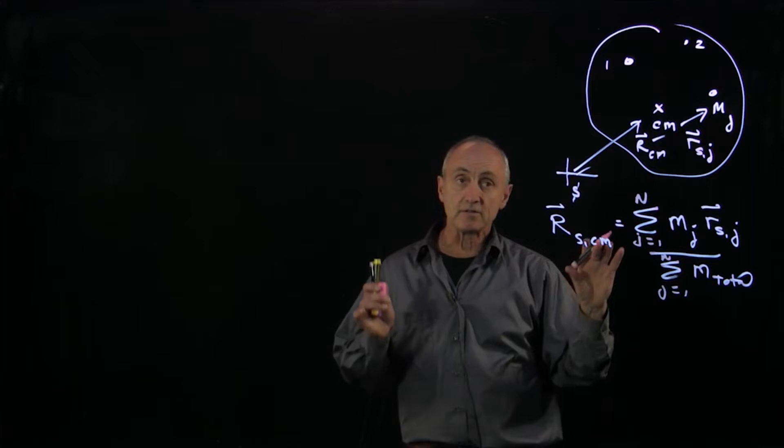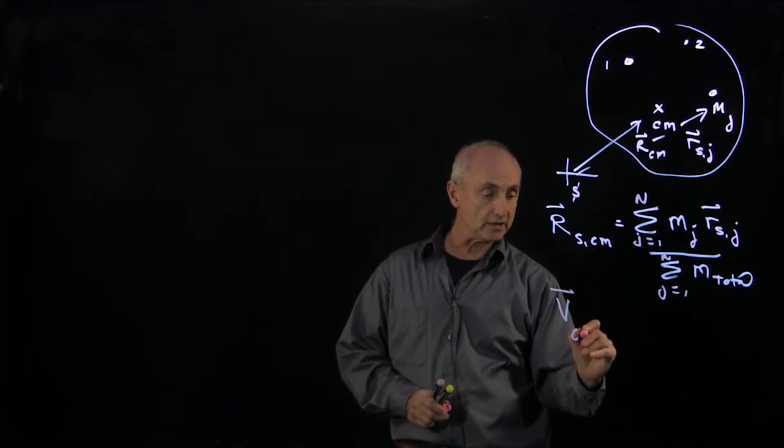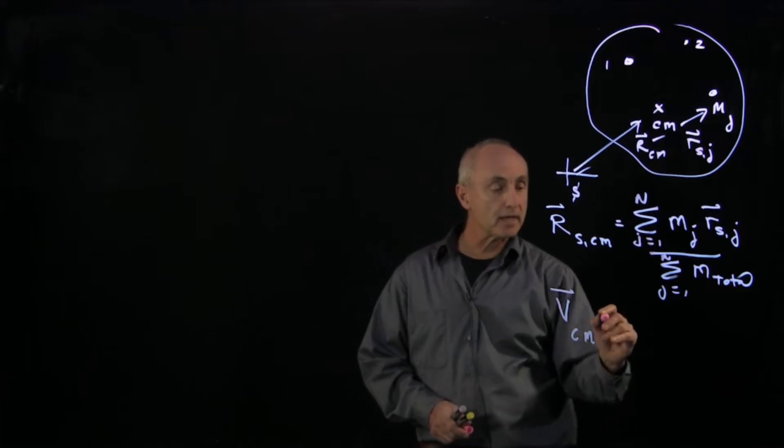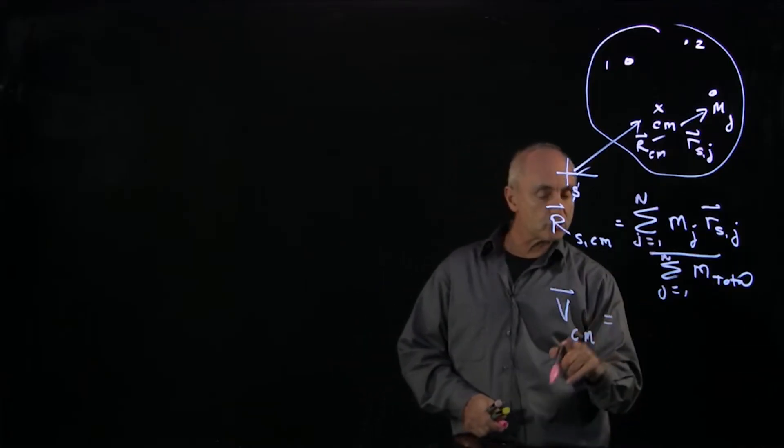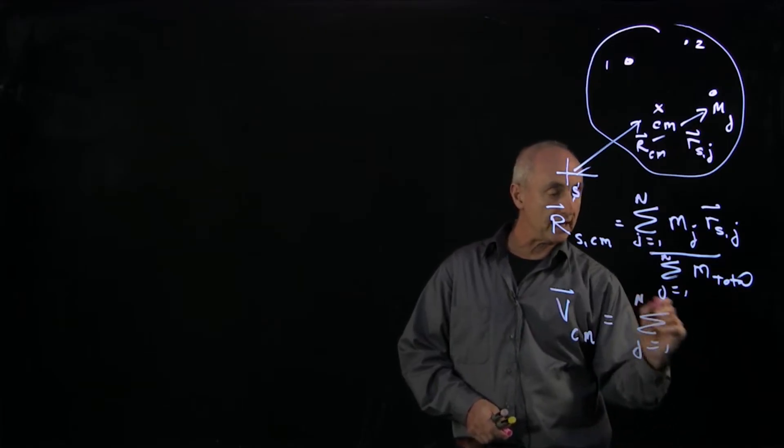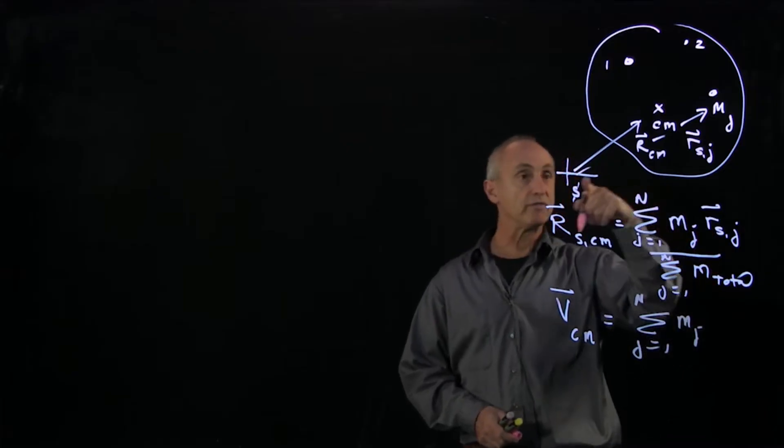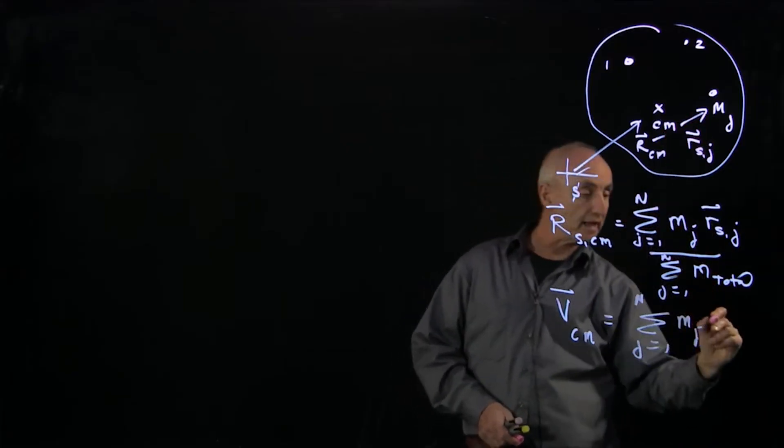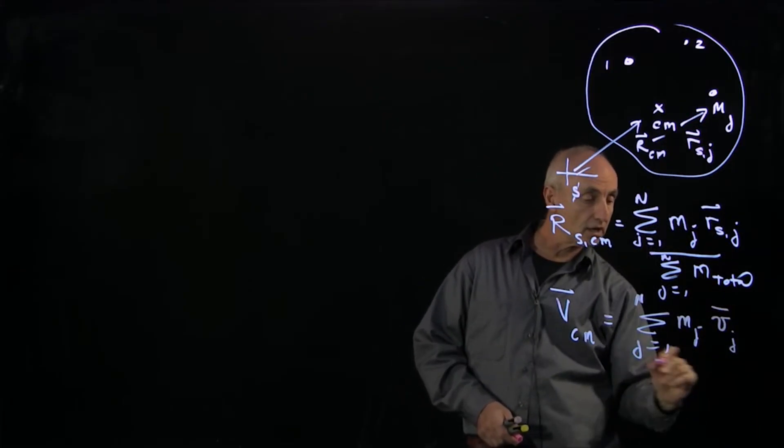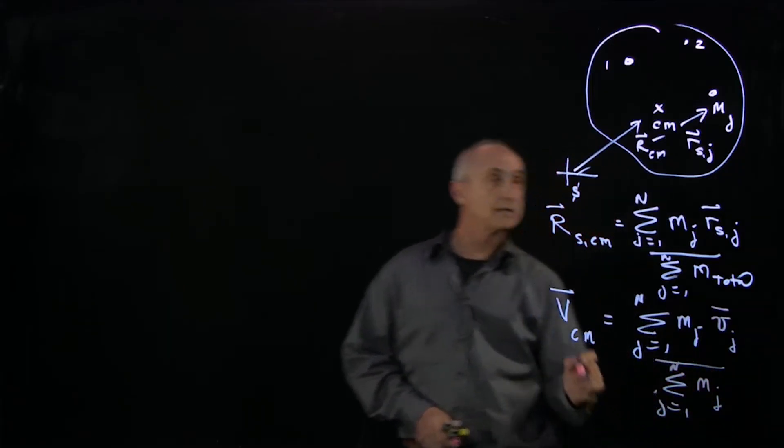Now, if I want to find the velocity of the center of mass, then I can just differentiate this. And I'm dropping the point s for the moment. But let's just differentiate 1 to n, and you'll see why. And when I differentiate the position vector of the object, that's the velocity of the object, divided by j goes from 1 to n, the total mass.